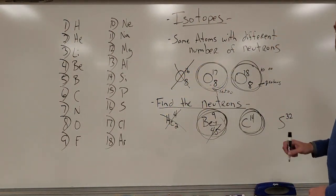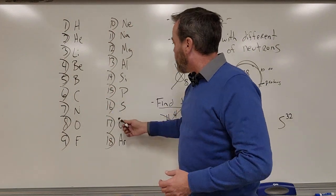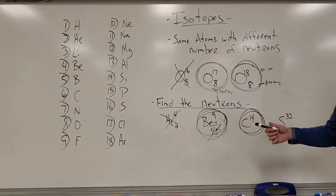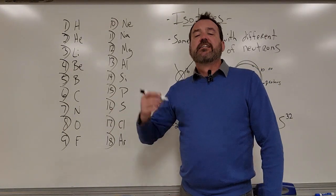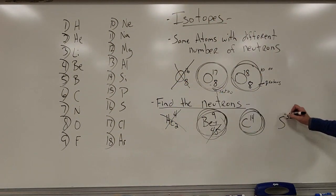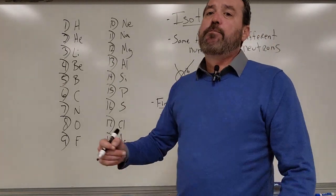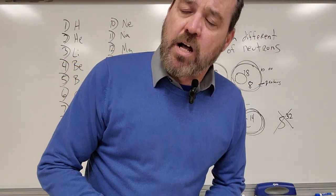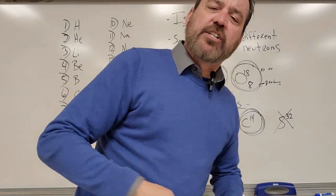Sulfur-32: sulfur is number 16, so 16 protons. 16 plus 16 is 32, so we've got 16 protons and 16 neutrons — this is not an isotope because both numbers are the same. That's isotopes in a quick nutshell. That's part one of the chemistry chapter — many more parts to come.